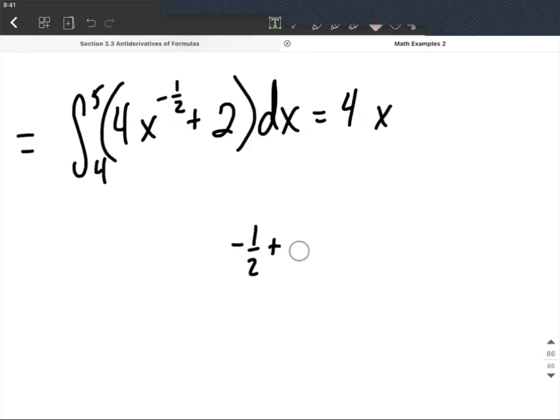I'm going to strategically write that 1 as 2/2. That's the same thing as adding 1, so our new exponent is going to be 1/2. Now normally we would divide by that new exponent, but equivalently to dividing by 1/2 would be multiplying by its reciprocal 2 over 1, or 2.